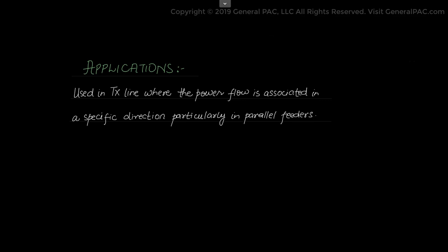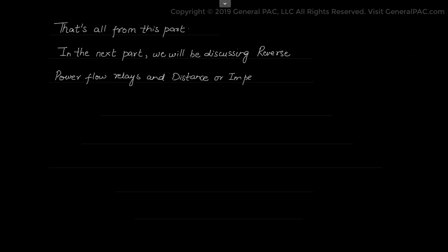Also directional overcurrent relays are used in networked systems where the systems are all interconnected with each other and they are not radial, or when power flow can occur in either direction of the line. In the next video we will be discussing reverse power flow relays and distance or impedance relays that are used in electrical power systems and their applications as well.